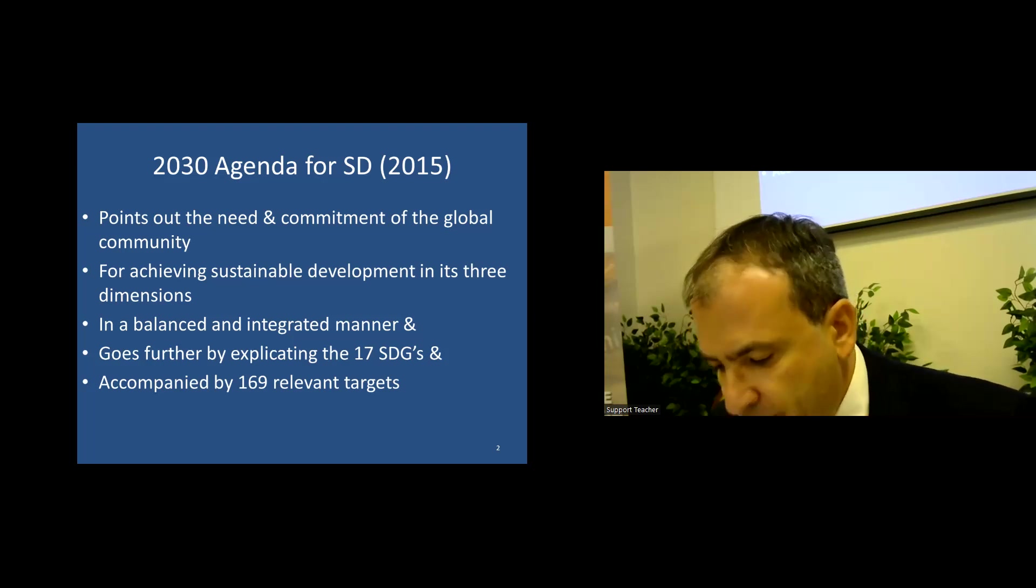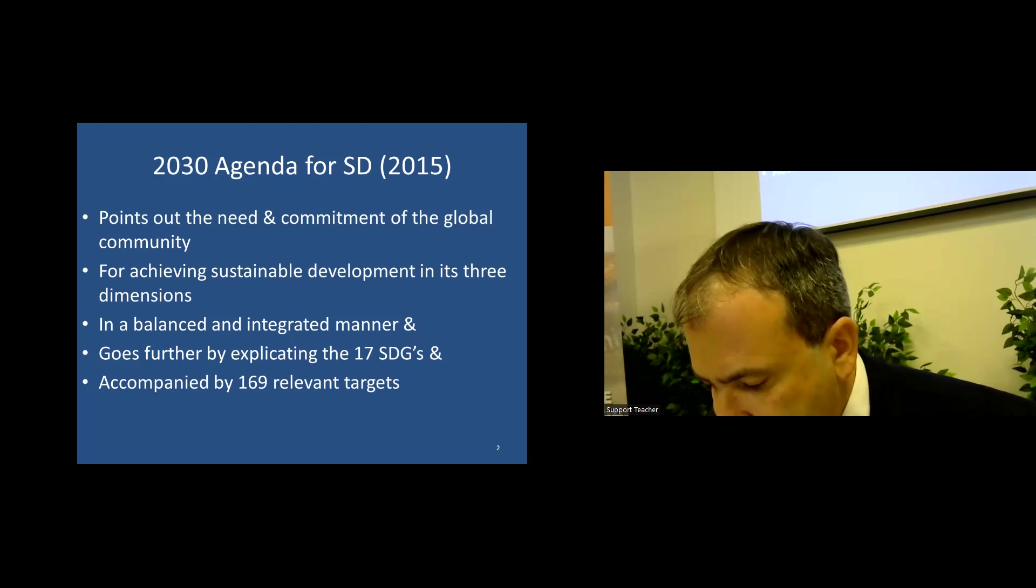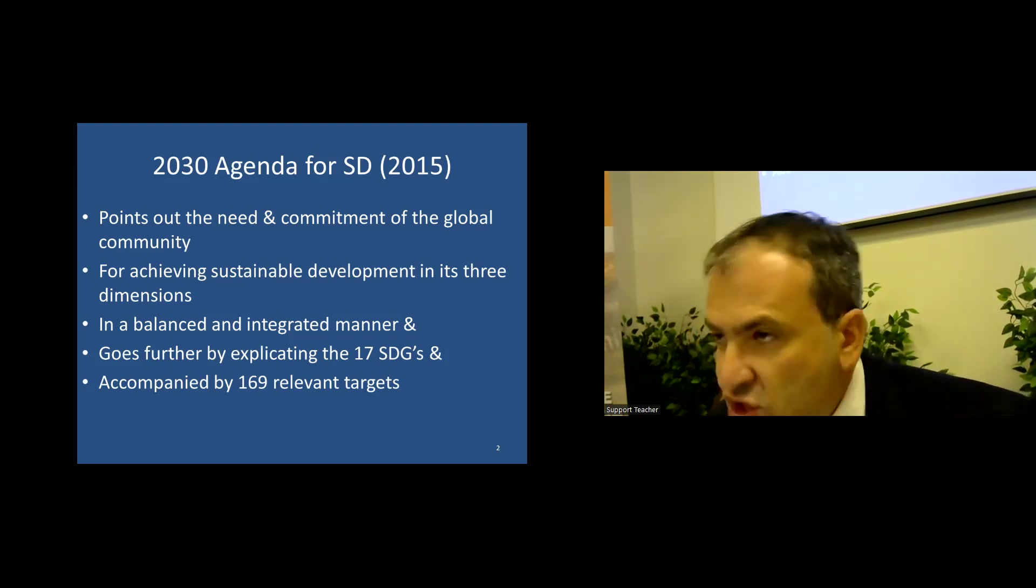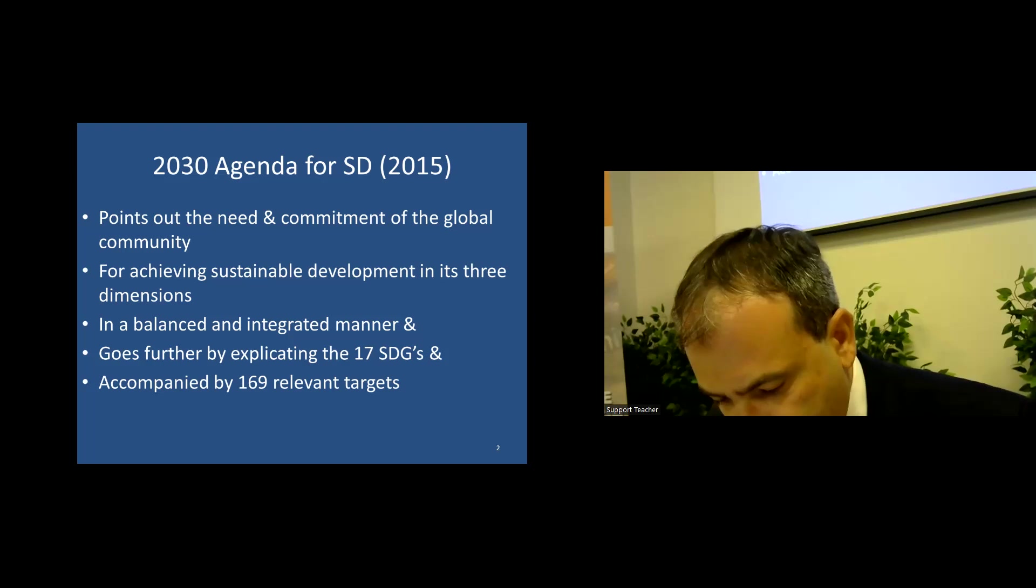The same applies for the need to be able to empirically assess sustainability literacy achieved via a valid and reliable instrument. Such a psychometric instrument should cover all three dimensions of sustainable development and at the same time take into account that, as in the case of environmental literacy, sustainability literacy is expressed in both the cognitive and the affective domains. It is thus necessary to probe people's knowledge, attitudes and behaviors with regard to the three dimensions. The concept of sustainability consciousness has been developed to describe the results of education for sustainable development. It is used as an alternative to the term sustainability literacy.